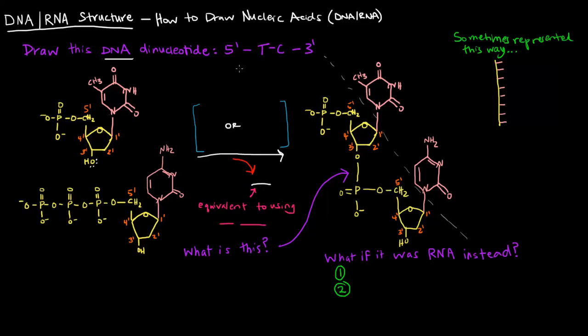This means we would have two nucleotides connected together, specifically deoxynucleotides because this is DNA, with the 5' phosphate group on the thymine, and the 3' OH on the cytosine. So how do these two actually connect?